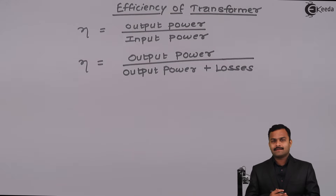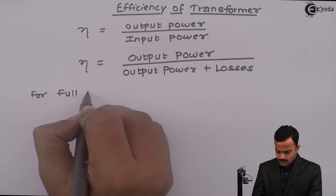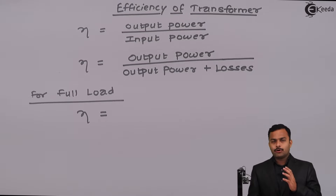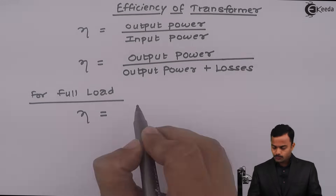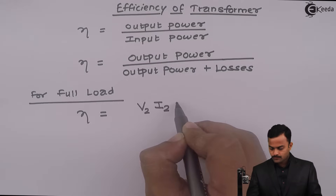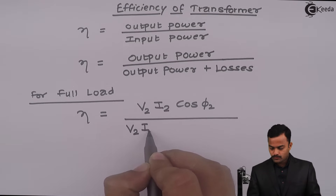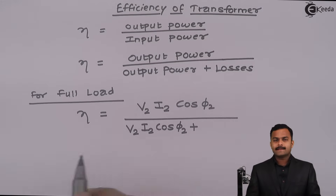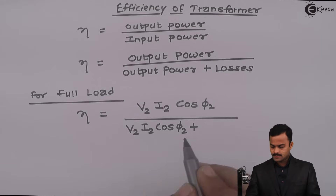The transformer rating is apparent power, so to get actual power I need to multiply it with power factor. For full load, efficiency equals output power at the secondary side, where a load having power factor cos Phi 2 is applied with secondary voltage V2 and secondary full load current I2. There are two losses in a transformer: core losses, also called iron losses, and copper losses.